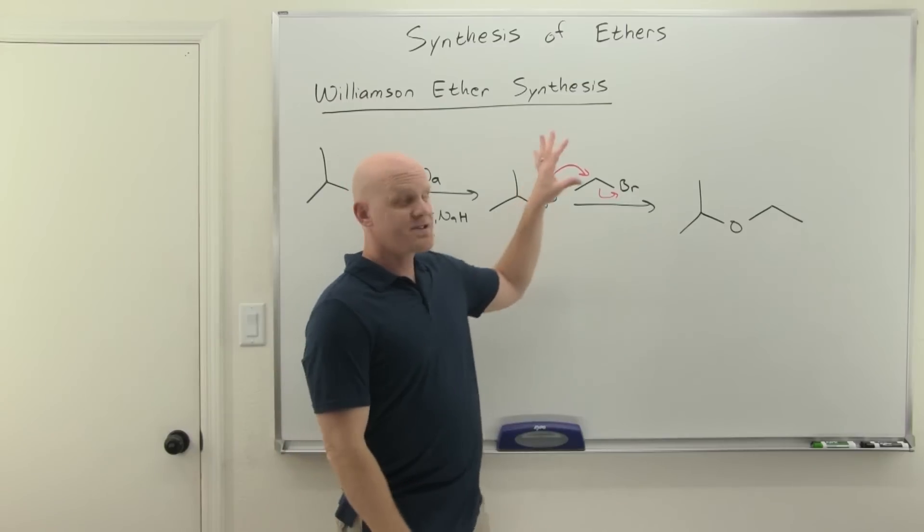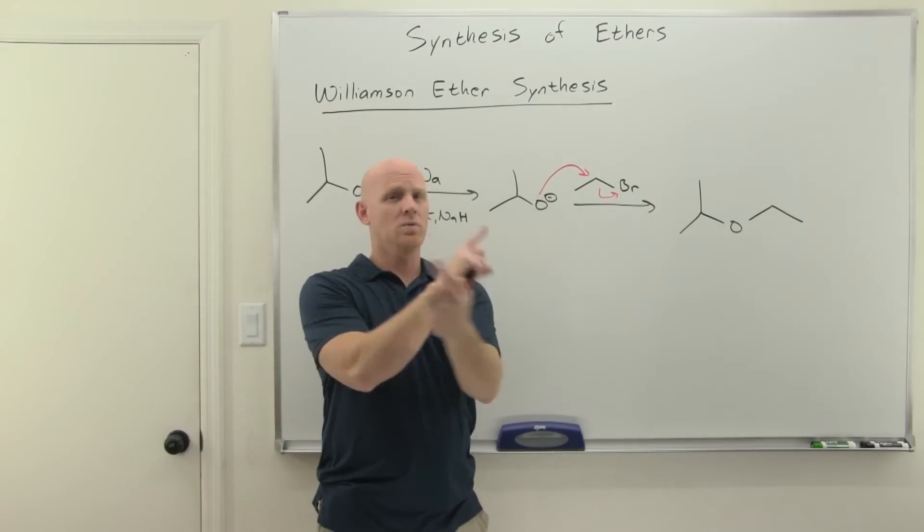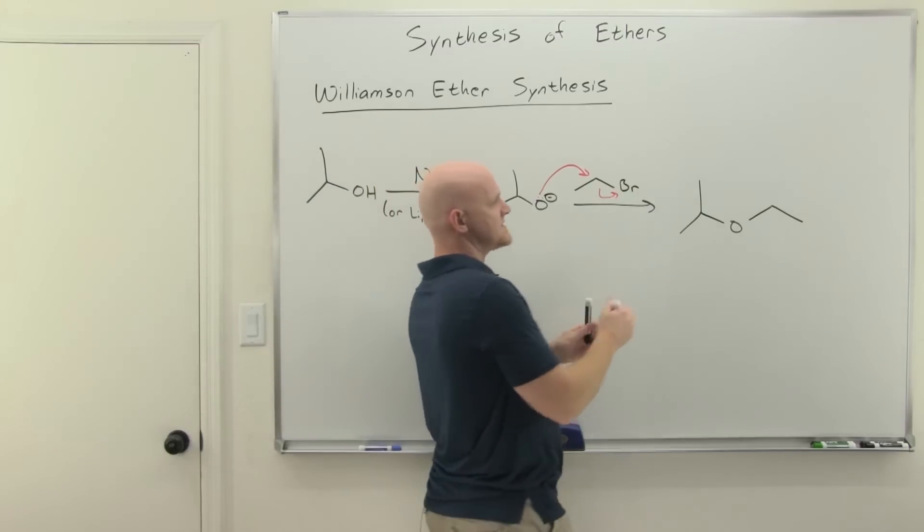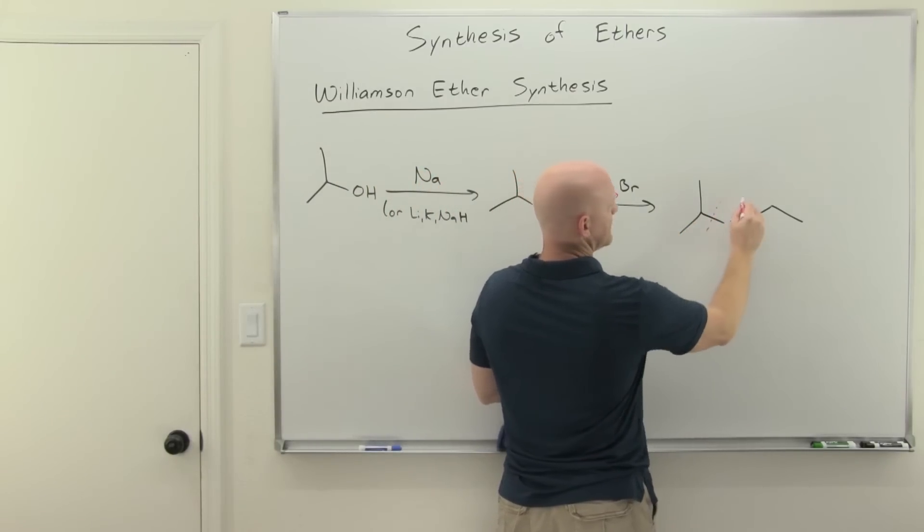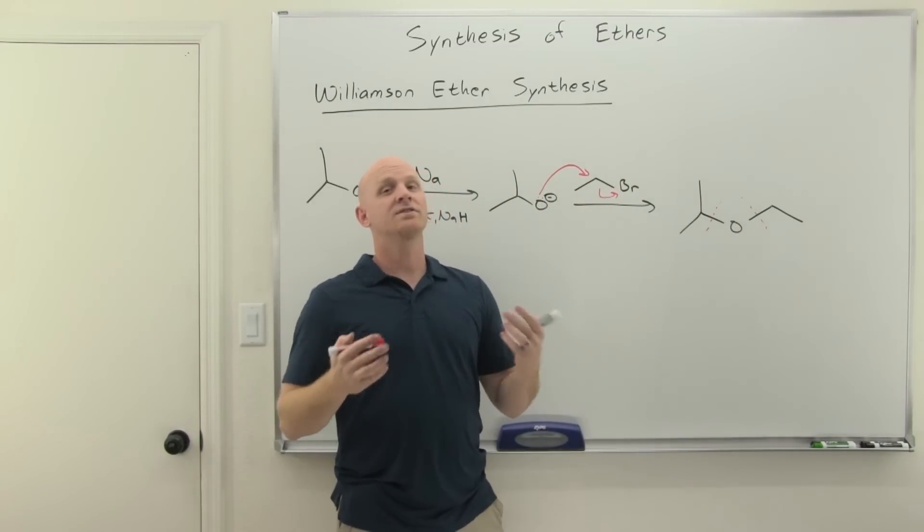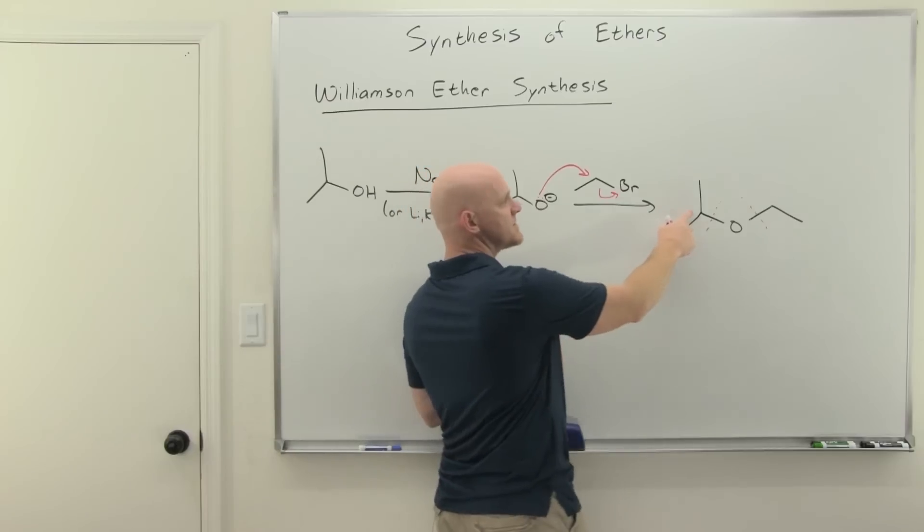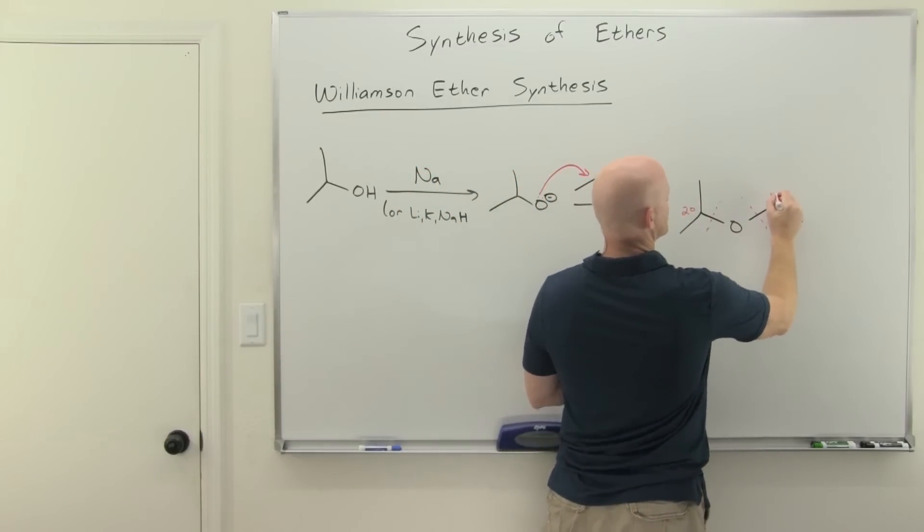And so oftentimes when you're presented with a Williamson ether synthesis, you're actually asked to go backwards. And you're supposed to realize that on an ether, if you're doing the Williamson ether synthesis, you can either make either one of those carbon-oxygen bonds. And you've got to decide which one is easier to make. Well, it's all about how substituted the carbon is. So this carbon right here is a secondary carbon. This one's a primary carbon.